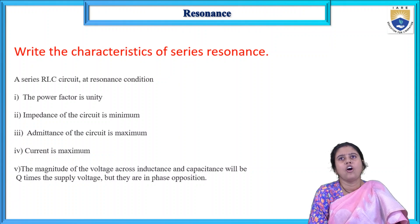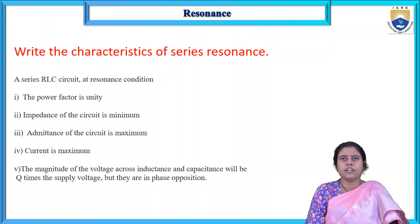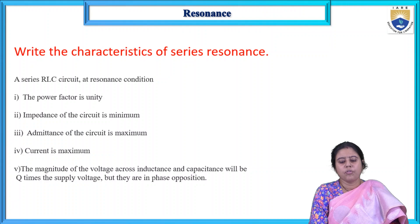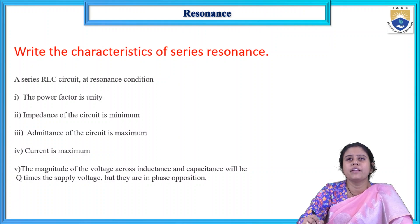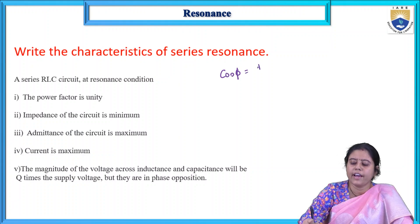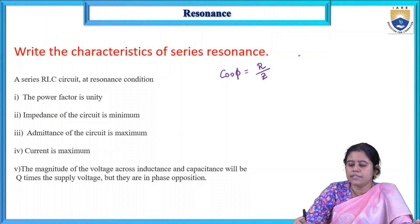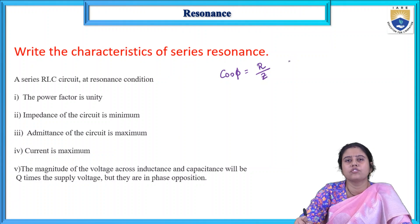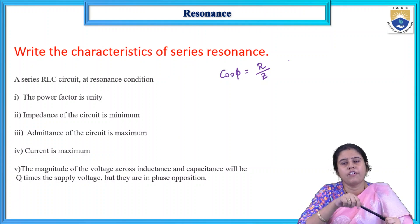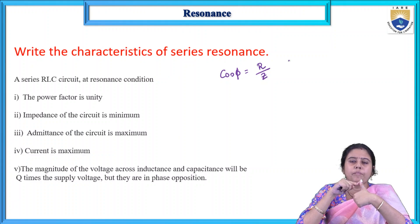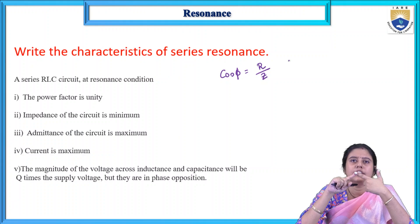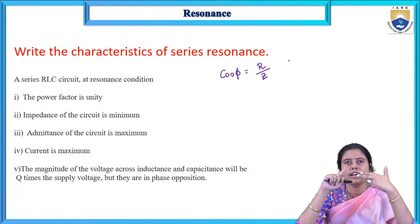What are the characteristics of series resonance? This is a very important question and I will discuss them point by point. First: the power factor is unity. Power factor equals cos(φ) = R/Z. The angle between voltage and current is the power factor angle. We can also say it is the angle between apparent power and active power. There are different definitions: the angle between resistance and impedance, the angle between overall voltage and current, and the angle between apparent power and active power.